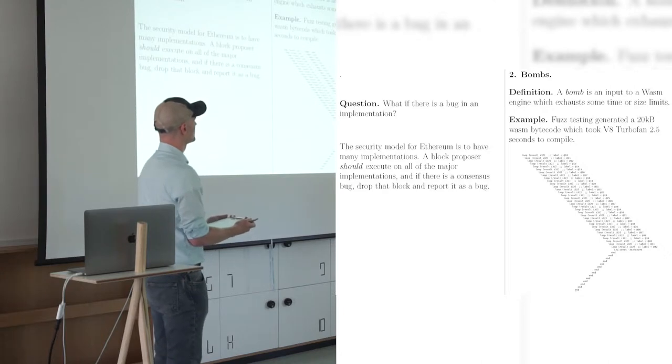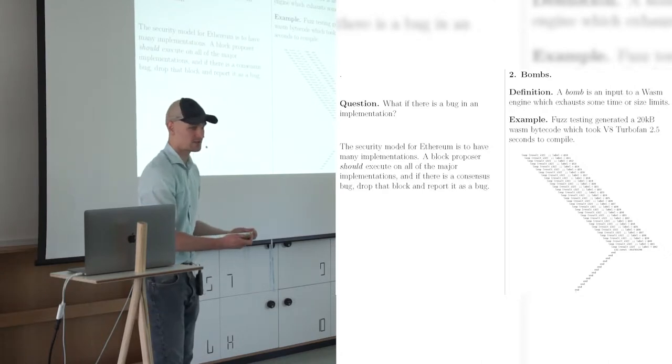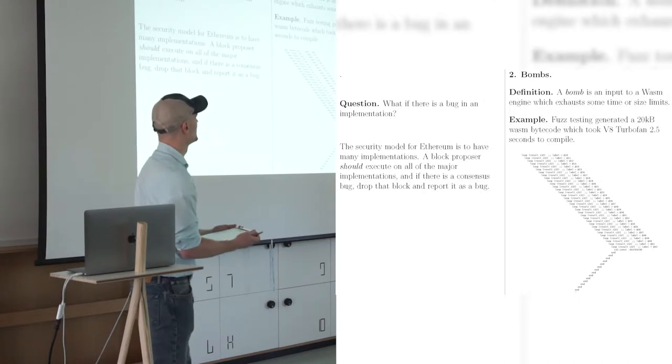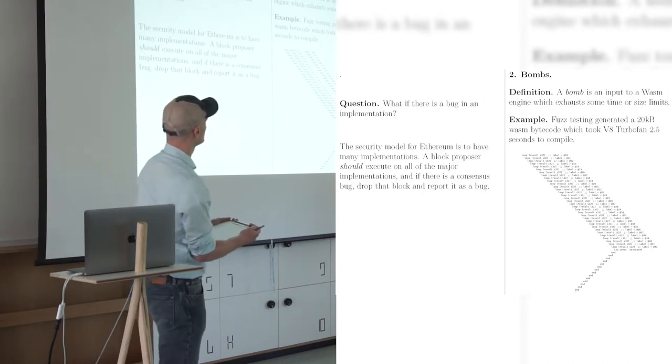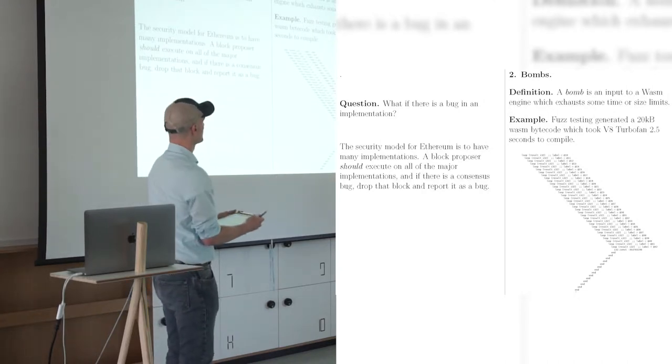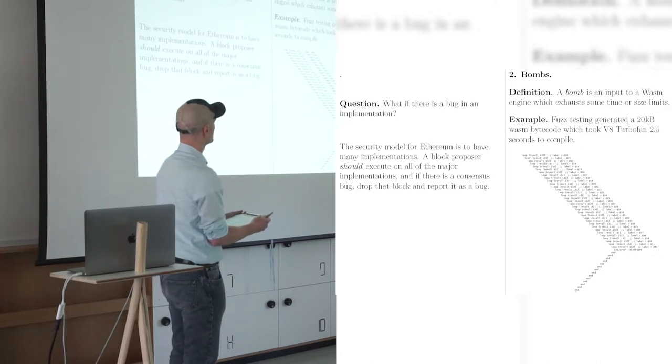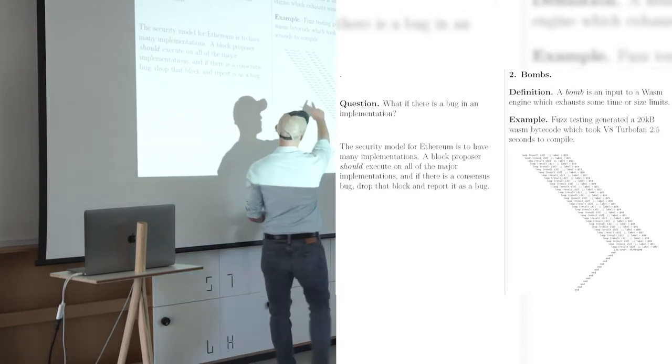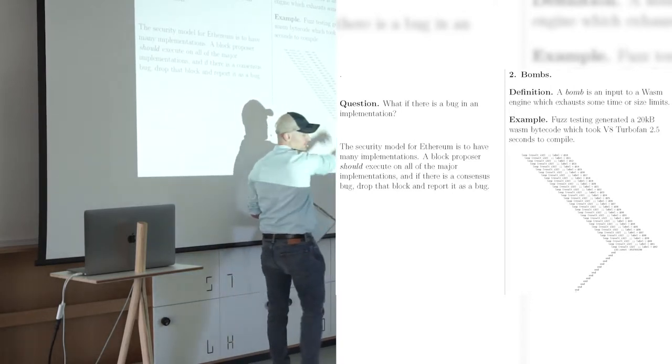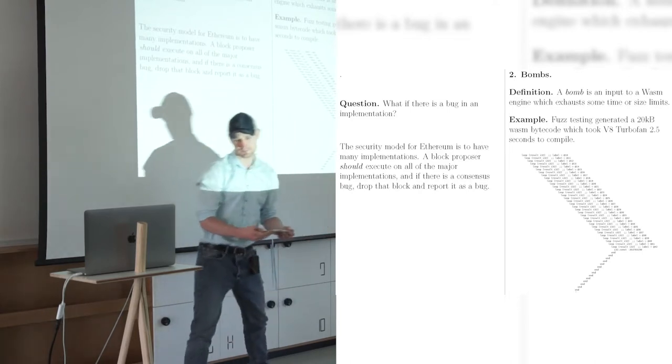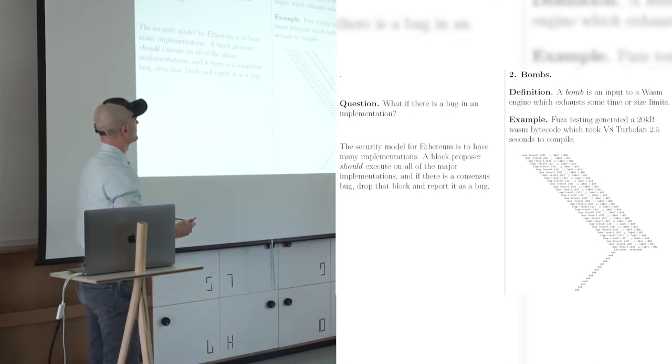So a bomb is an input to a Wasm engine which exhausts some time or size limits. What those limits are depend on what your system you're running on. So for Ethereum, we have at most one second for execution time, hopefully 200 milliseconds or 100 milliseconds. And 24 kilobyte around their bytecode sizes. And Guido, our fuzz tester, found this is a snippet. You can't see it. The resolution is bad. But this says loop. It's just nested loops. This is WebAssembly code.